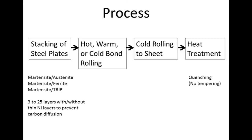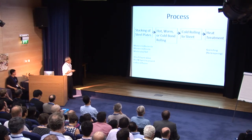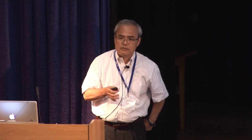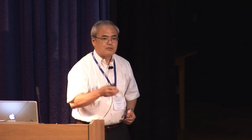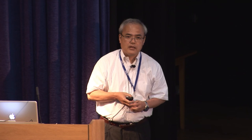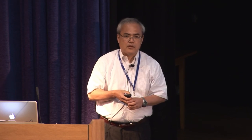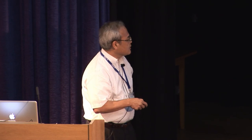To fabricate multi-layer steels, we stack the steels of interest and then perform hot rolling, warm rolling, or even cold rolling for bonding. Finally, we heat treat to achieve a desired microstructure and to increase interfacial toughness. For the high-strength layers, we use as-quenched martensite. For high-ductility layers, we use austenitic steels, ferritic steels, TRIP steels, or dual-phase steels — whatever steel has sufficient ductility. In other words, you can combine any steels of interest. Sometimes we insert thin nickel layers to prevent carbon diffusion between the layers.